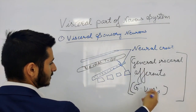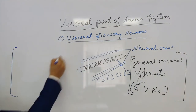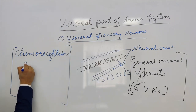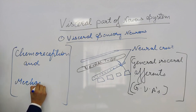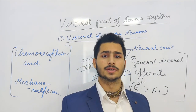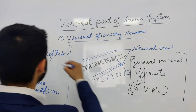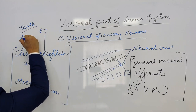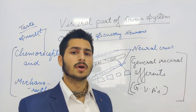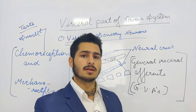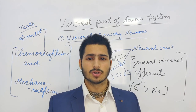The functions carried out by visceral sensory neurons, or GVAs, are chemoreception and mechanoreception. Chemoreception refers to chemoreceptors present in different regions of the body — these help us detect senses such as taste and smell. Mechanoreception involves mechanoreceptors mainly present on the skin, which help us detect sensations of touch.